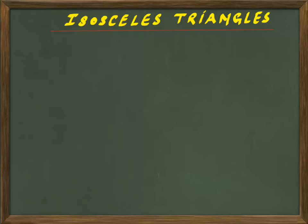Hello friends, this is Ajit from Catalyst Class. In this video we will understand the isosceles triangle — what is the isosceles triangle. We will talk about the definition of the isosceles triangle, we will create an isosceles triangle, and we will talk about one or two theorems. So the triangle with at least two sides equal to each other is called the isosceles triangle.